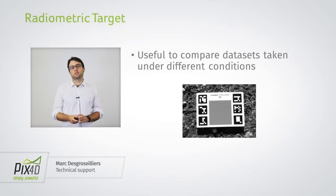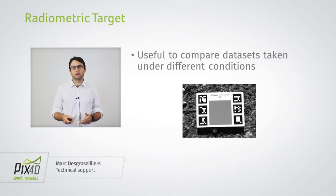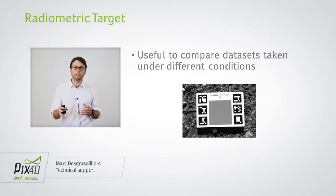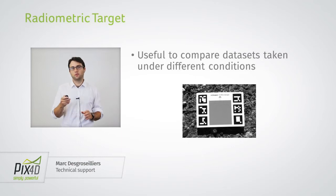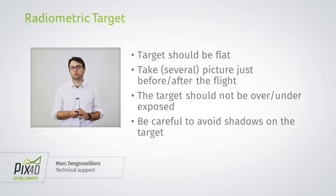In many of these precision agriculture projects you're going to be using a radiometric calibration target. While it's not mandatory, it does allow you to compare datasets taken on different days or under different conditions, and as such many users have this calibration target and use it for their project. Let me give you a few tips about how to best use this calibration target.